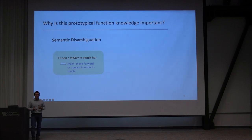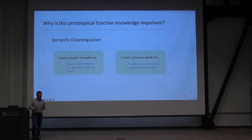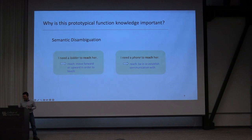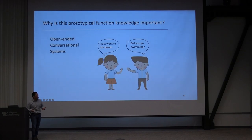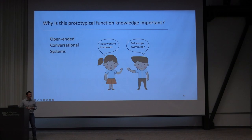Why is this information important? Here are some examples in typical NLP applications. First is semantic disambiguation. Consider: 'I need a ladder to reach her' versus 'I need a phone to reach her.' Though structurally similar, in the first sentence 'reach' means to move upward to touch, while in the second it means to establish remote communication. Also, intelligent virtual assistants like Google Voice and Apple Siri need open-ended conversations. If a girl says 'I just went to the beach,' the boy can reply 'Did you go swimming?' — an appropriate follow-up. Virtual assistants also need common-sense knowledge to generate similar responses.